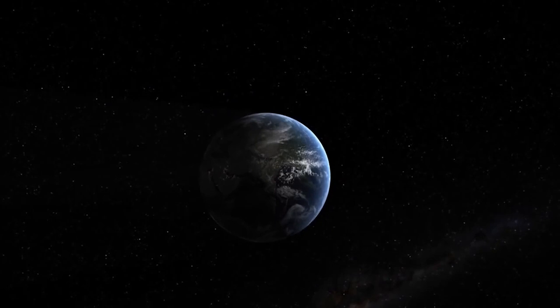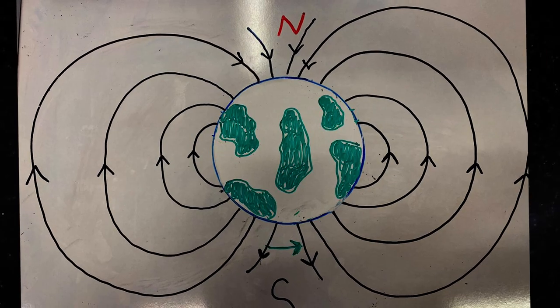Here we are, this is Earth. Can we switch it to whiteboard? Those lines around it, that's our magnetic field. The field is caused deep in the Earth where convection currents move the iron, generating a current inducing a magnetic field.